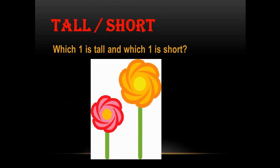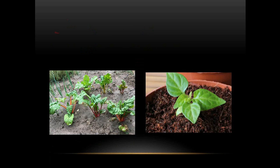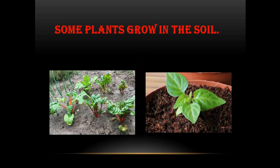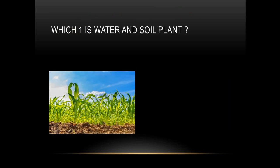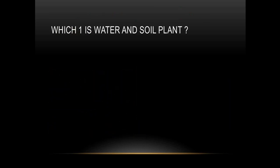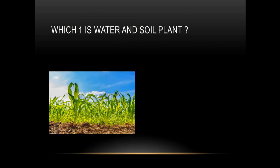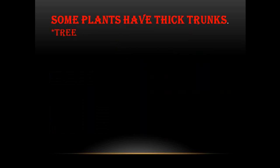Some plants grow in the soil, so you can call them soil plants. They are growing in soil. And some plants grow on water. Here are two pictures — you can see these plants are growing in water. This is called a water plant, and they have a specific name: algae. Now you have two options — tell me which one is a soil plant. Yes, this one is a soil plant. Good job!